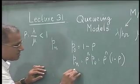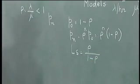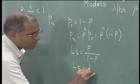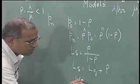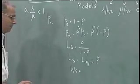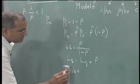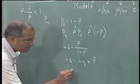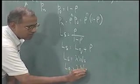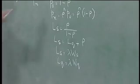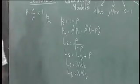We also derived expressions, particularly Ls equal to Lq plus rho, and we used the relationships Ls equal to lambda times Ws and Lq equal to lambda times Wq. With all these equations, let us work out a numerical example to understand what is meant by each of these equations.